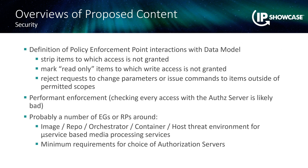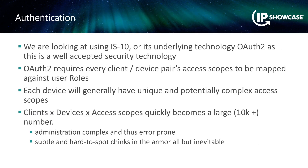The model around zero trust is that by default nothing is trusted — you have to establish your credentials, and then we authenticate whether you should be allowed in and at what level. We're pointing at IS-10 and OAuth 2 here. Security could be very onerous on your network traffic if not done thoughtfully. We've taken into account that checking the status of something like an audio meter every frame and asking 'do you have rights to look at this?' 60 times a second would get a little nuts on your network. We've been quite pragmatic about the way that's all handled.